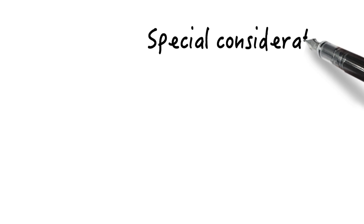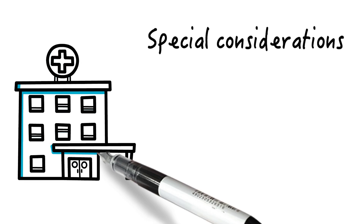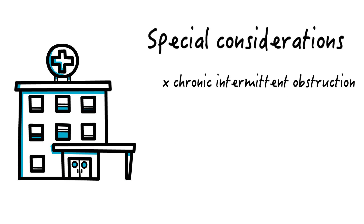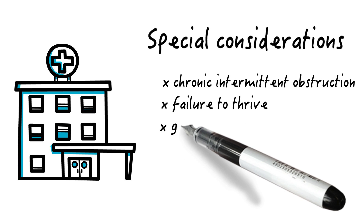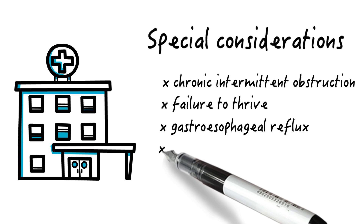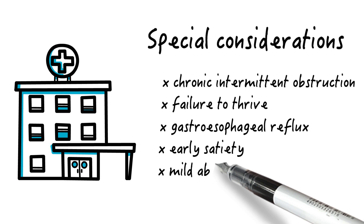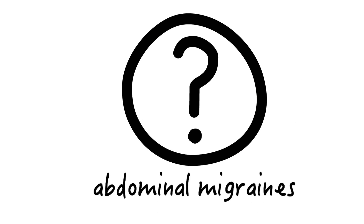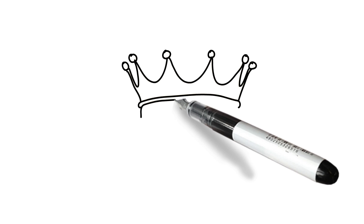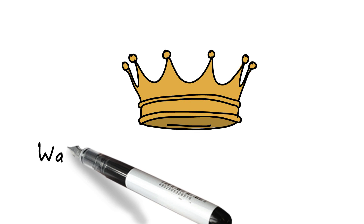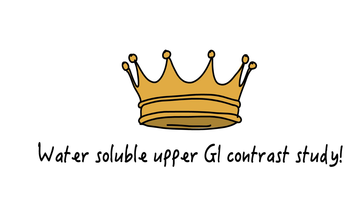A small mention for a subset of patients who will present less dramatically with chronic intermittent obstruction. They will also have nonspecific presenting problems such as failure to thrive, gastroesophageal reflux, early satiety, and mild abdominal discomfort. They may have been labeled in the past as suffering from abdominal migraines. We need to prove that the anatomy is normal by doing a quick and easy test — the upper GI contrast study — to rule out malrotation.